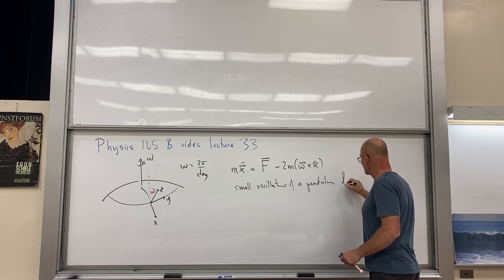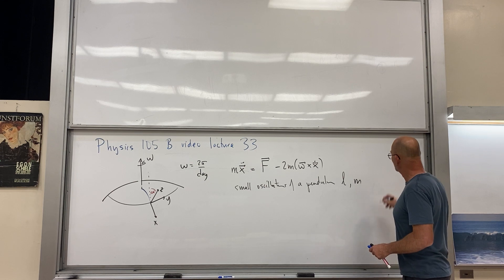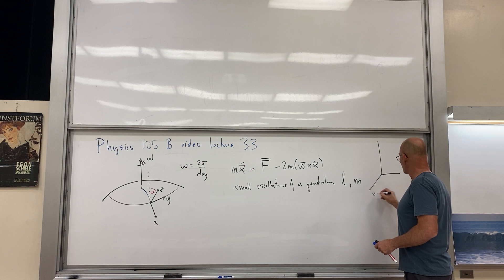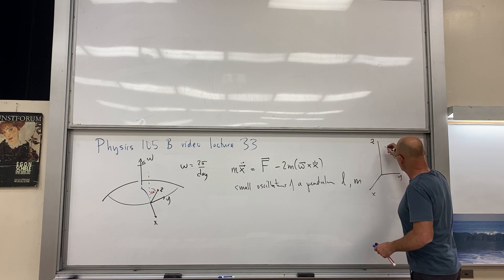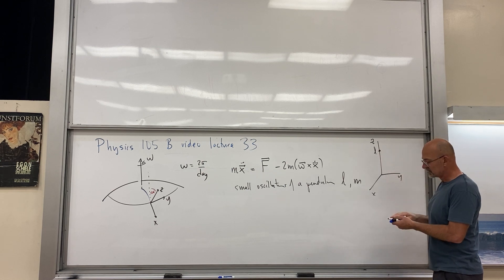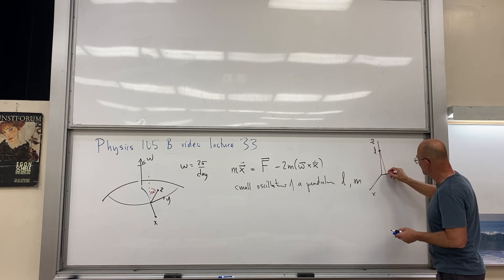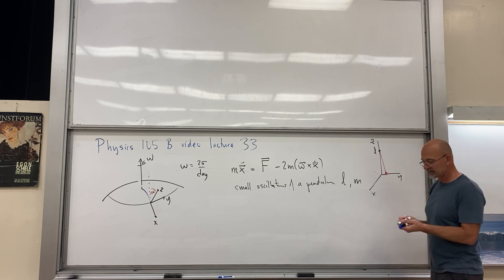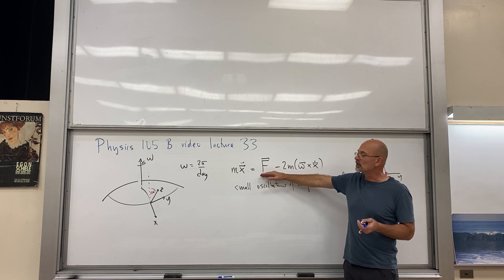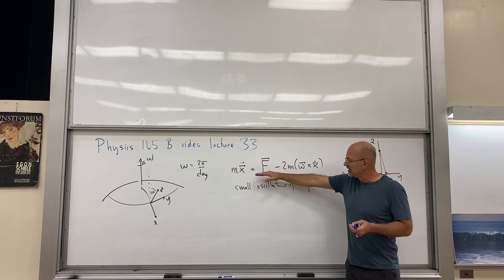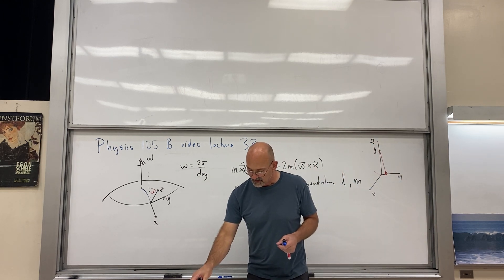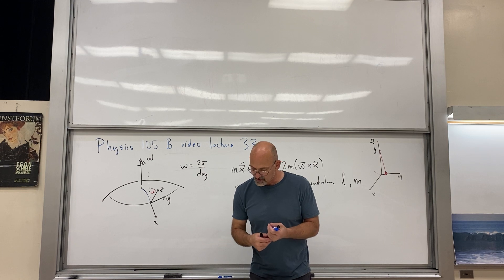The pendulum has length L and mass M. In our frame we have X, Y, Z axes, and we suspend the pendulum up at point L so it can swing freely. Its projection onto the plane is how we reduce this from three equations to two. We took the cross product, wrote out all three equations, and arrived at the following.